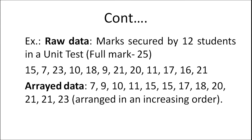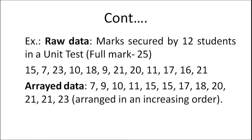For example, the marks secured by 12 students in a unit test out of 25 are: 15, 7, 23, 10, 18, 19, 21, 20, 11, 17, 16, and 21. When arranged in increasing order, we place 7 first as the least number, then 9, then 10, 11, 15, 15, 17, 18, 20, 21, 21 — now arranged in ascending order, this becomes arrayed data.